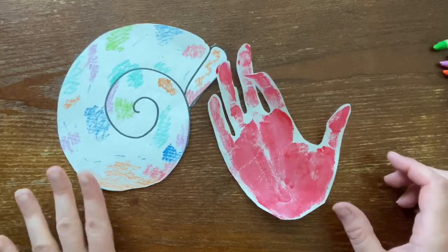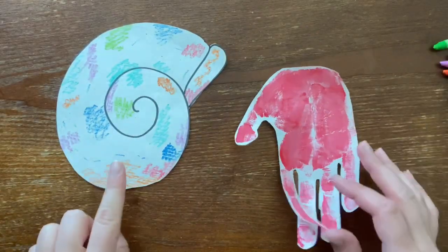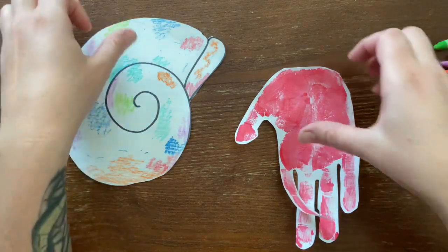Alright, so now that your handprint is cut out and your seashell is cut out, now is the time that we can go ahead and adjust the seashell to where we want on the crab.